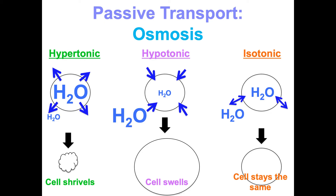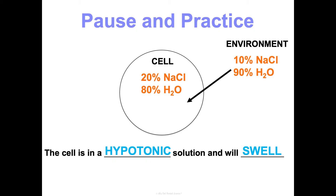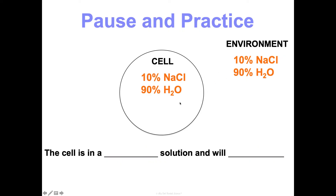Let's look at a couple of examples with numbers. If the cell's cytoplasm is 80% water and 20% NaCl, and the environment it's placed in is 90% water and 10% sodium chloride, water moves from higher water concentration outside to lower inside — so the cell is in a hypotonic solution and will swell up. In another example with more water inside than outside, water moves out, so the cell is in a hypertonic environment and will shrivel up. When the concentrations are the same, water moves in and out equally — isotonic — so the cell stays the same.